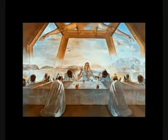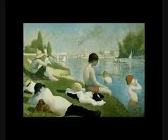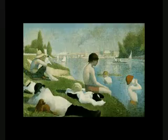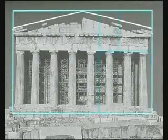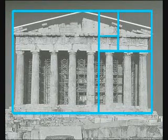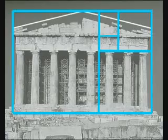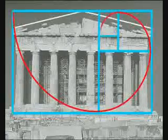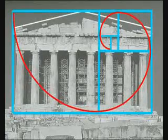Many artists have recognized the aesthetic power of the spiral and used it in their art, like Salvador Dalí's The Sacrament of the Last Supper and Seurat's Bathers at Asnières. But it was the Greeks who discovered it. We can demonstrate this by taking a picture of the Parthenon and overlaying rectangles over its different sections — you'll find they conform precisely to the golden section and this magic number, 1.618033.